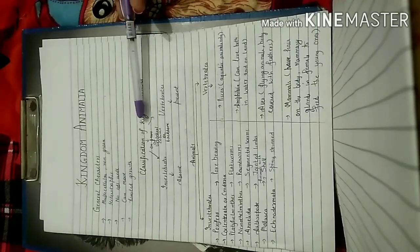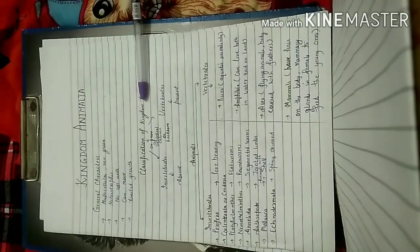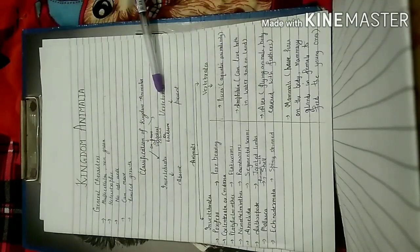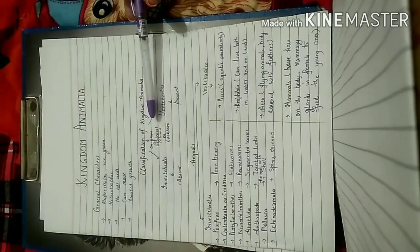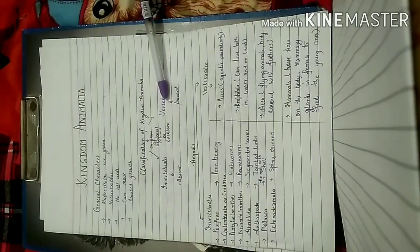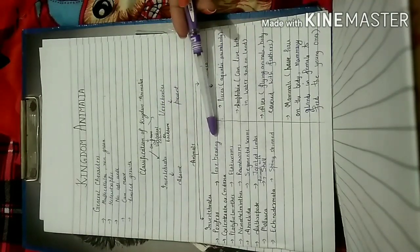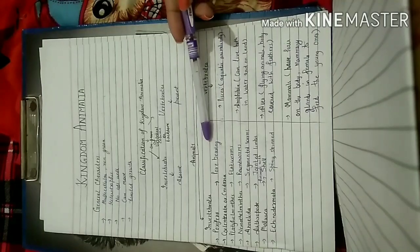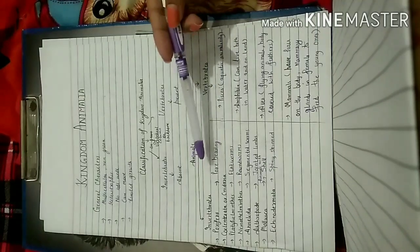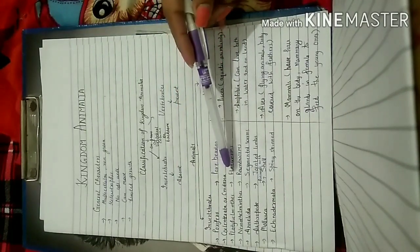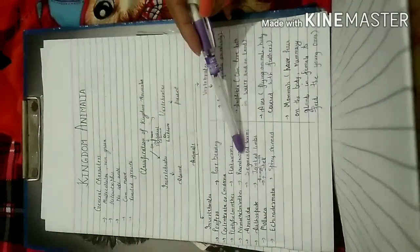Then we have also studied the classification of Kingdom Animalia, that is invertebrates and vertebrates, on the basis of presence or absence of vertebral column. Then we have studied the general characters of some of the phylums, and those phylums which we have studied in the previous video were Porifera, Coelenterata, Platyhelminthes, Nematoda and Annelida.